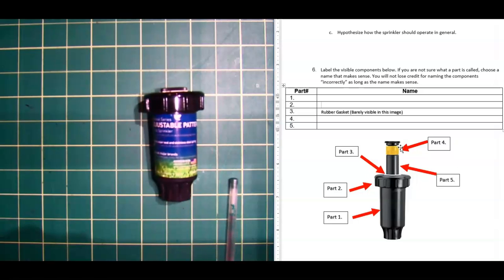Now, technically, this yellow piece and this black piece on top are two different parts separate from this part right here, part five. But as you'll see when we do our structural analysis, we're actually going to keep these two pieces together for our structural analysis for the sake of simplicity. So go ahead and just call this one part and this part five a separate part and do your best to fill out this table as best you can. Notice it says if you are not sure what the part is actually called, choose a name that makes sense. You will not lose credit for naming the components incorrectly as long as the name makes sense.